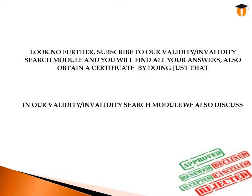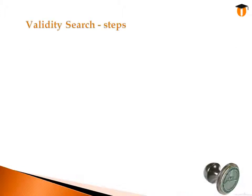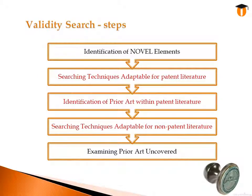In our Validity Invalidity Search Module, we also discuss Validity Search Steps such as: Identification of Novel Elements, Searching Techniques Adaptable for Patent Literature, Identification of Prior Art within Patent Literature, and Examining Prior Art Uncovered.